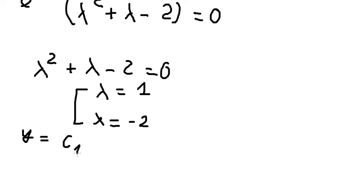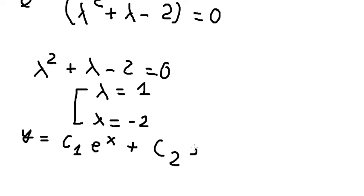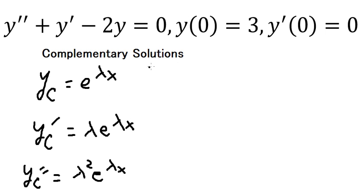Now we have the general solution. We have c₁ — constant one — multiplied by e to the power of x (substituting λ = 1), plus c₂ times e to the power of negative 2x (substituting λ = -2). Now we apply the initial conditions.